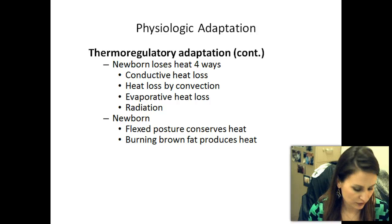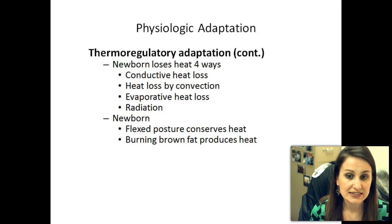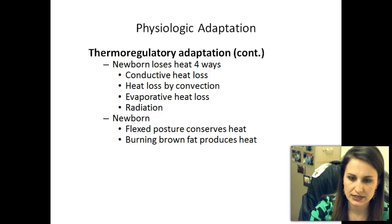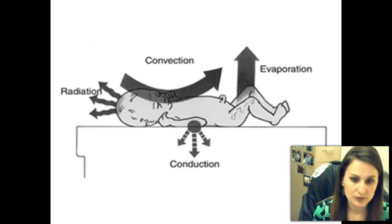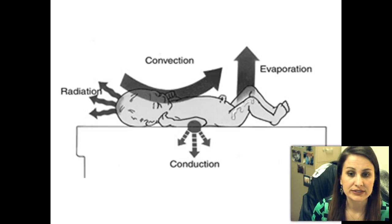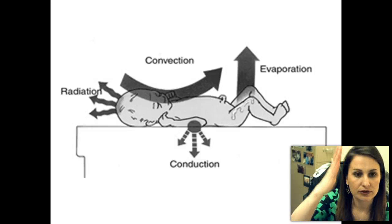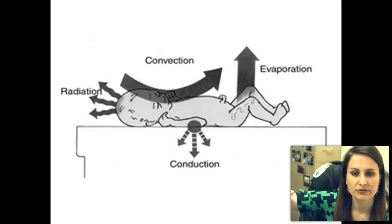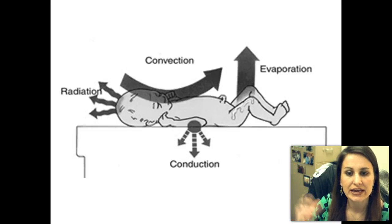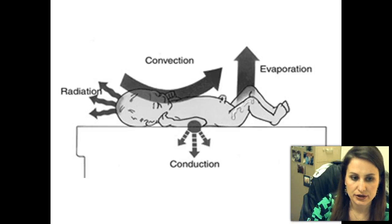A newborn can lose heat in four different ways: conductive heat loss, heat loss by convection, evaporation heat loss, and radiation. Radiation — think of a cold window. Convection — cool air, like air conditioning blowing over them. Evaporation — they're wet; we have to get them dry after a bath or water vapors will carry that heat away. And conduction — they're laying on a cold table, so their heat goes into that surface.